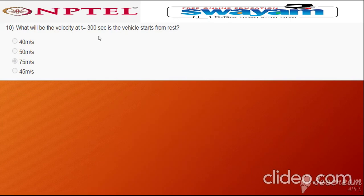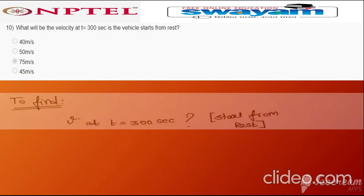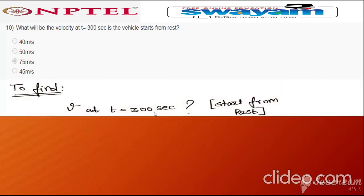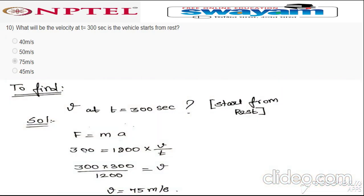Question ten: what will be the velocity at t = 300 seconds if the vehicle starts from rest? Using F = ma, so F_a = 300 N = m × (v/t) = 1200 × (v/300). Solving for v gives 75 m/s.